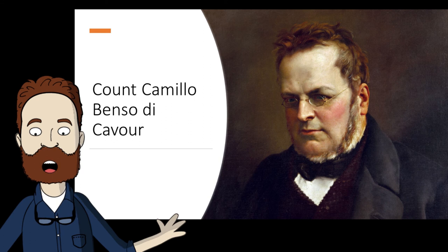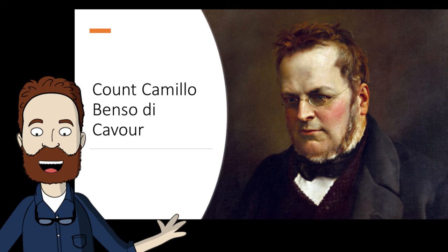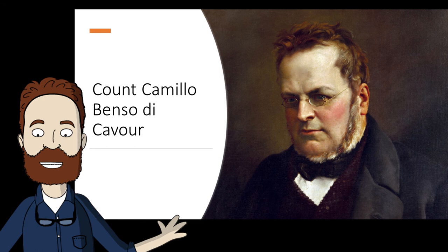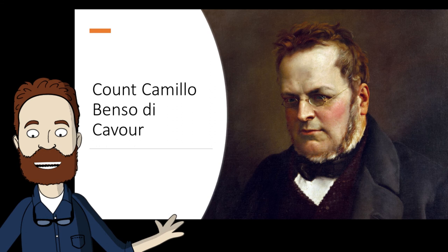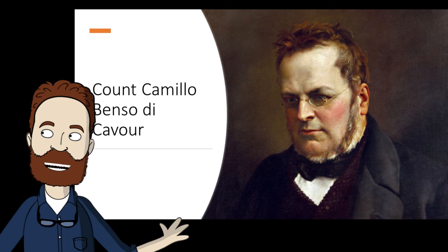Cavour became premier of Piedmont in 1852 and concentrated his efforts on freeing Italy from the Austrian Empire. He knew that Sardinia could not take on Austria by itself — they would need allies. To that end, he joined Britain and France in the fight against Russia in the Crimean War. This enabled him to speak at the peace conference afterward, where he publicly announced the Italian desire for reunification, making his impression on France and England.